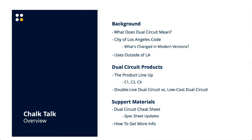We'll talk about the differences between C1, C2, and CX that you might have seen in our cut sheets. Then I want to touch on something not well understood in the industry: there are really two different types of dual circuit exit signs, and it's important to understand the difference. We'll end with support materials and cheat sheets. As always, you're muted but please use the chat and Q&A features.